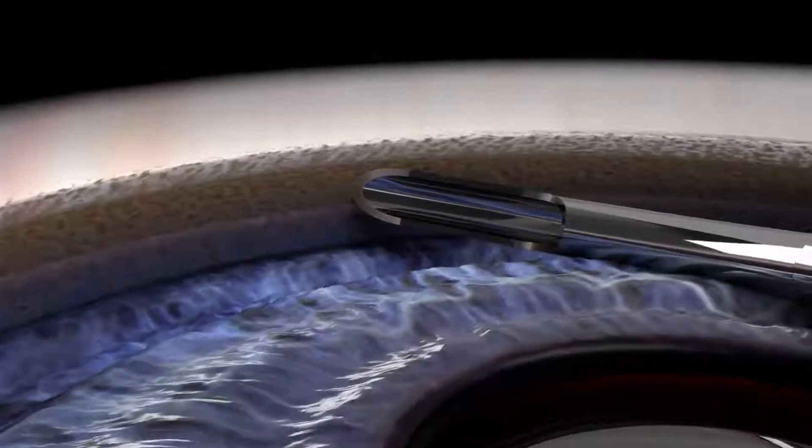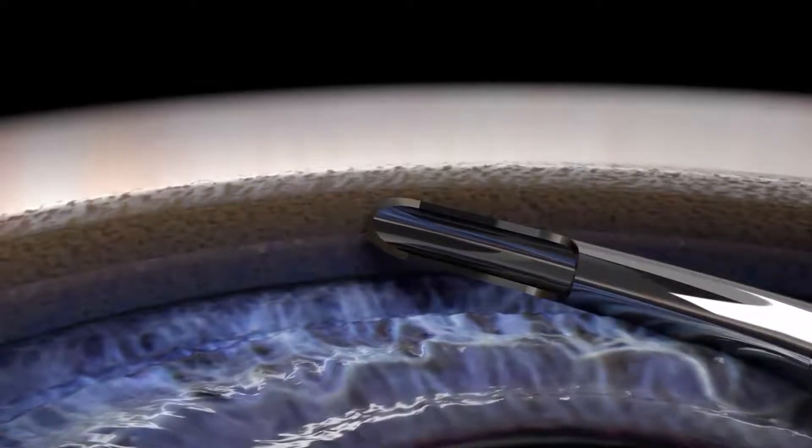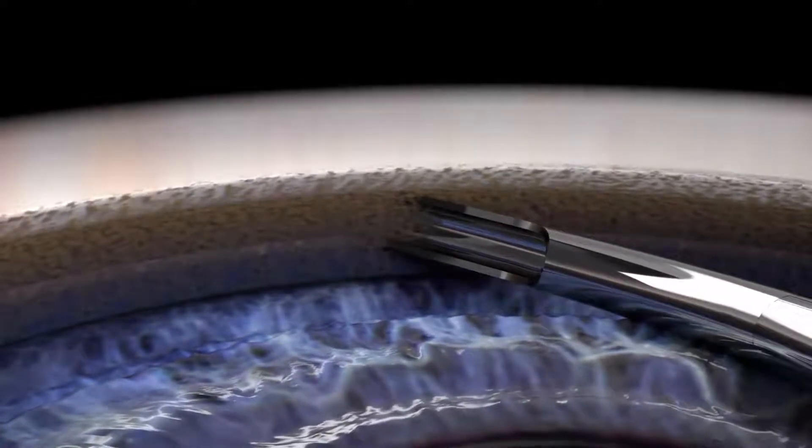Once through the trabecular meshwork, hold the cannula steady with light contact against the back wall of Schlem's canal.